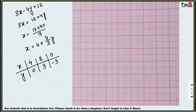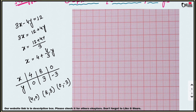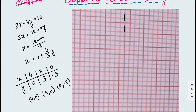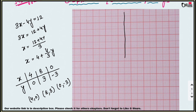So we have three points: (4, 0), (8, 3), and (0, −3). Now you have to plot these three points on your graph paper. First, draw the x-axis and y-axis.